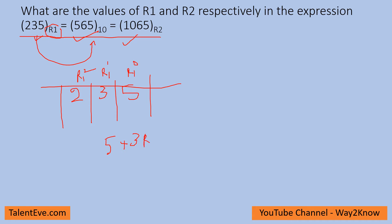This conversion should be equivalent to 565, which gives 2R1 square plus 3R1. Bringing this 565 to the left-hand side gives 2R1 square plus 3R1 minus 560 equals 0.